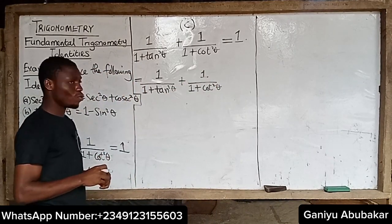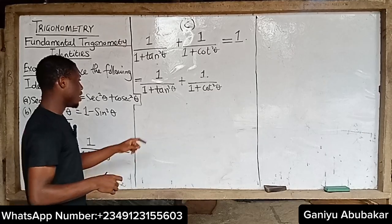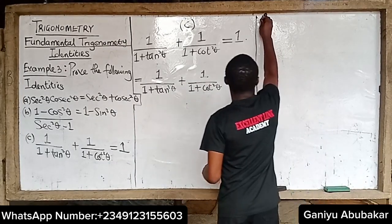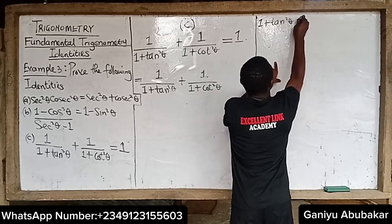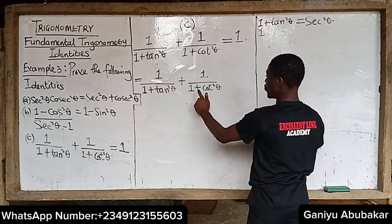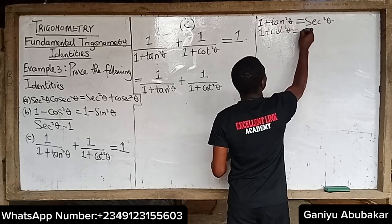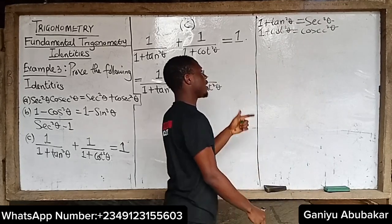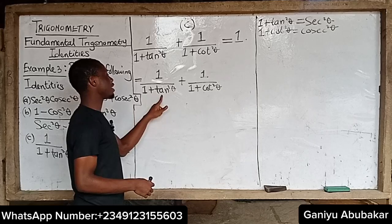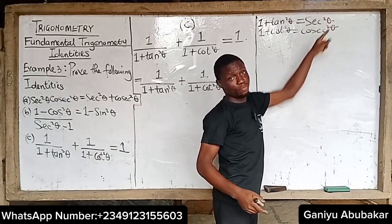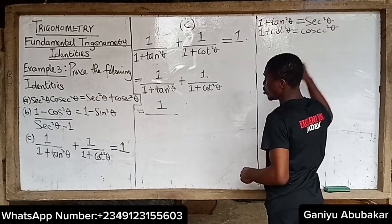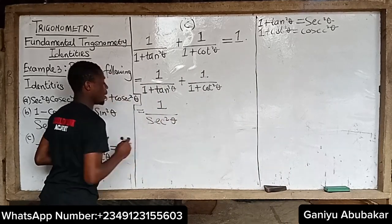My very first task here is quite simple. What we know from our trig identities is that one plus tan squared theta gives sec squared theta. So anywhere I see one plus tan squared theta, I can replace it with sec squared theta. So the first term becomes one over sec squared theta.